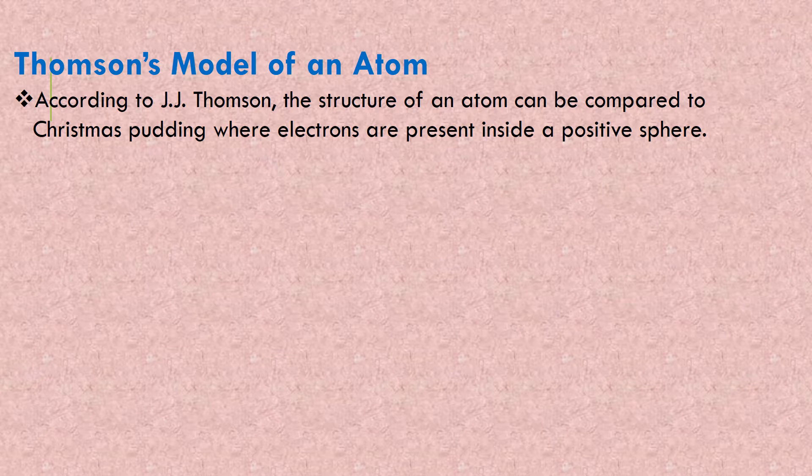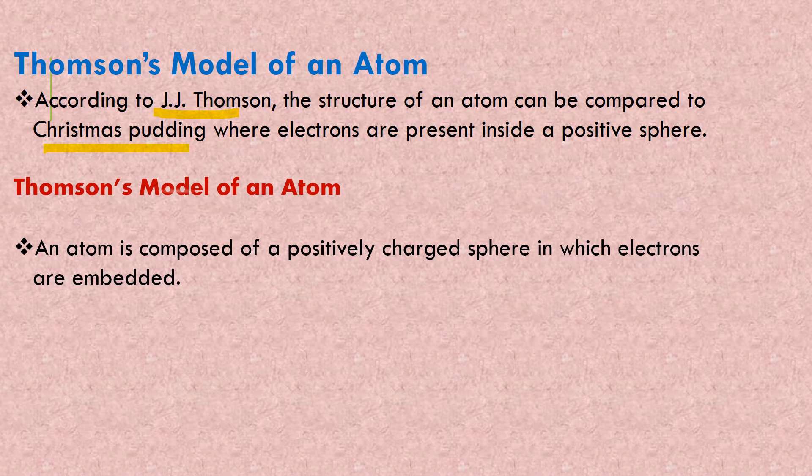Based on many theories, there are different models of an atom. One of them was Thomson's model of an atom. According to J.J. Thomson, the structure of an atom can be compared with Christmas pudding, where electrons are present inside a positive sphere. The Christmas pudding, the cake in which the tutti fruities are considered to be the electrons, so we can easily pluck it out and eat.